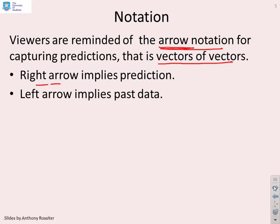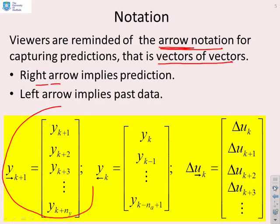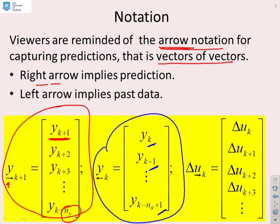So, here's some examples just to remind you. I've got y right arrow underscore k plus one, so that tells you I'm starting my prediction at sample k plus one and I'm going forward in time. Now, the specific notation, the arrow, doesn't tell you how far forward you go. It just tells you you're going forward. And you'll notice here we've got a left arrow notation, which you'll see says you're going backwards in time, so you're picking up past data.